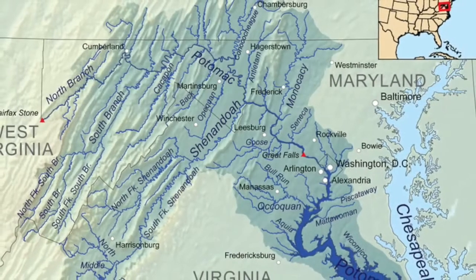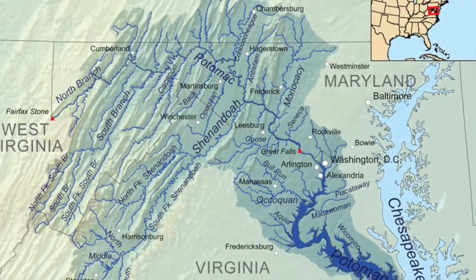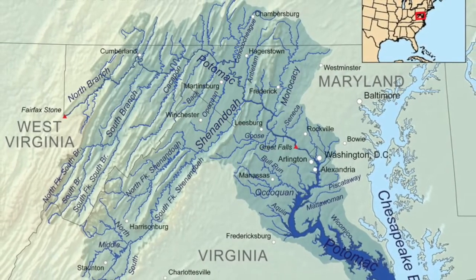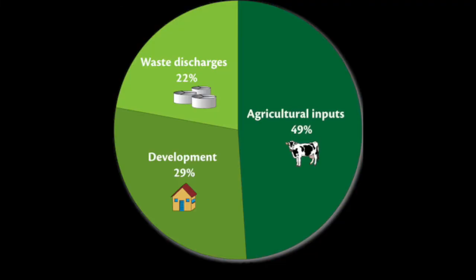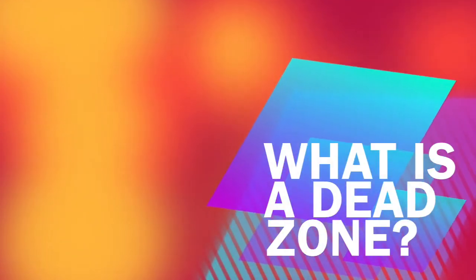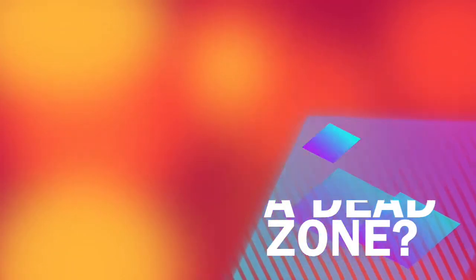The Potomac flows through our nation's capital, gathering water and pollutants on the way until it eventually deposits them in the Chesapeake Bay. As a result of pollution flowing in from various sources, the bay has been overrun by widespread dead zones. So, what is a dead zone and how do they form?